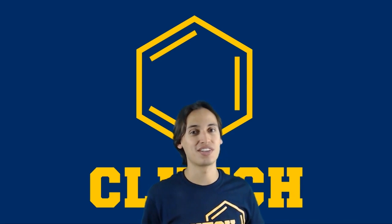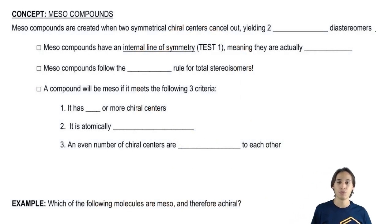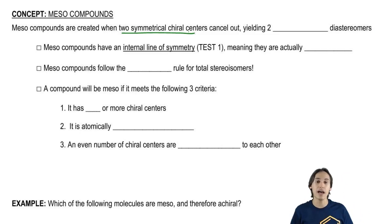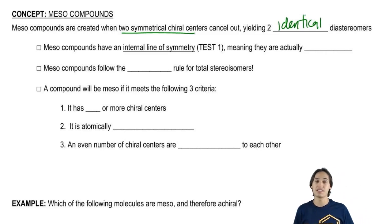Well, it turns out that there is one exception to that and that's meso compounds. So let's go ahead and get into this. Meso compounds are specific types of molecules where you basically have two chiral centers that perfectly cancel out, yielding two identical diastereomers. So what that means is that after forming these stereoisomers, two of them are going to wind up being the same, meaning that it's actually going to be achiral.